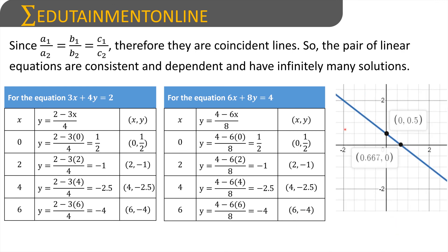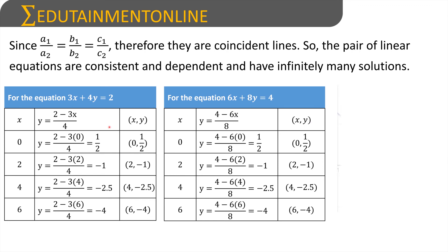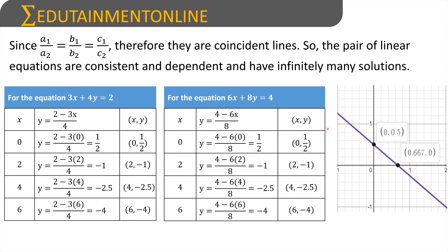The combined graph shows both lines are the same. This graph has two lines — the first line and the second line — but since these two are coincident lines, one line lies upon the other. Therefore it will have infinitely many solutions.